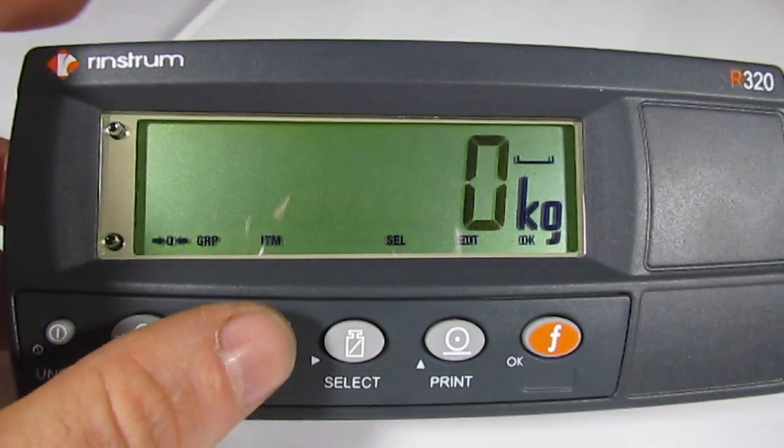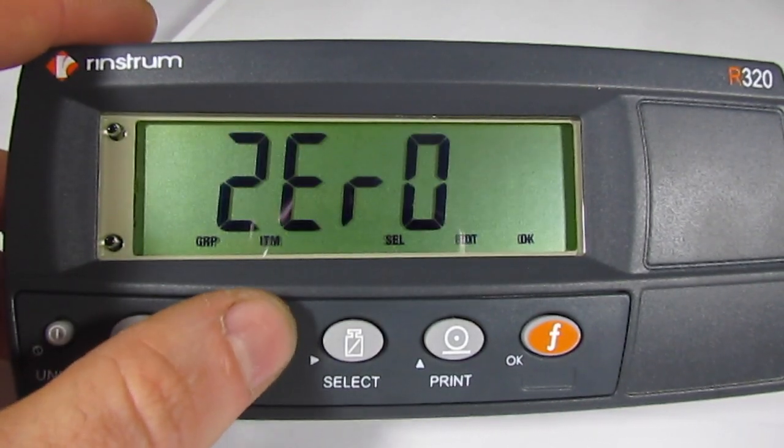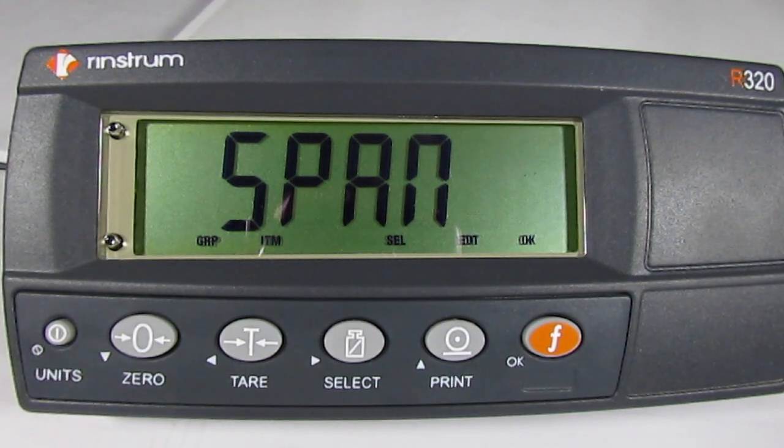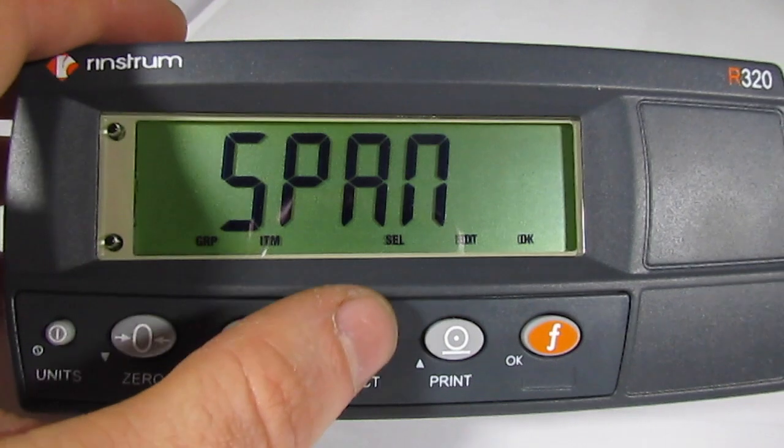We will press the tear key twice to go to SPAN CAL. At SPAN CAL, we will enter that by pressing the select key.